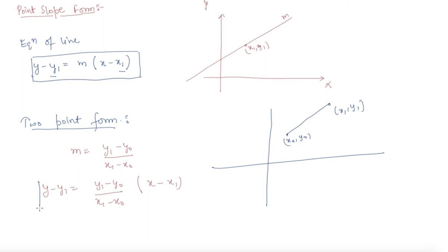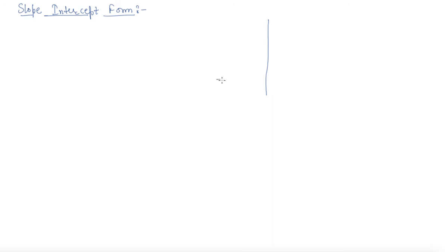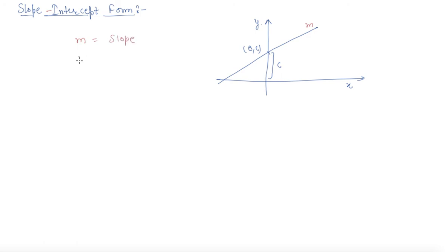It is very important to note down the different equations of the line. Now we will discuss about the slope-intercept form. In this form, what is intercept? The point at which the line crosses the y-axis — let us say this distance is c — and the slope of the line is m. So this is the slope-intercept form: we are given m as slope and c as intercept. The line equation is y equals mx plus c, where m is the slope and c is the intercept on the y-axis.